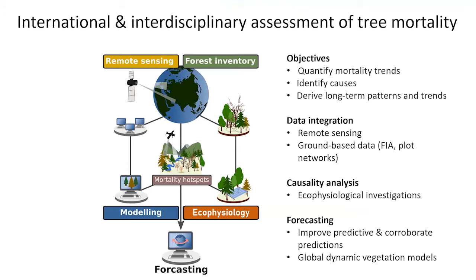The idea behind these initiatives is an international interdisciplinary assessment of tree mortality, joining different disciplines: remote sensing, forest inventory, modeling, and eco-physiology. We aim to quantify mortality trends, identify causes, and derive long-term trends and patterns. We focus on data integration — joining remote sensing data, as Matt will show today, with ground-based forest inventory plots in a common database. We also want to do causality analysis to get at the mechanisms that can improve forecasting in global dynamic vegetation models.